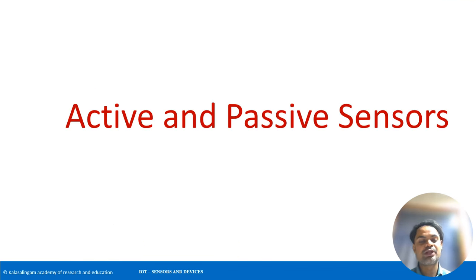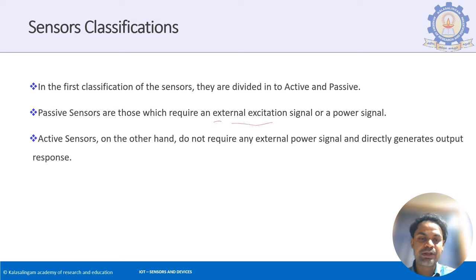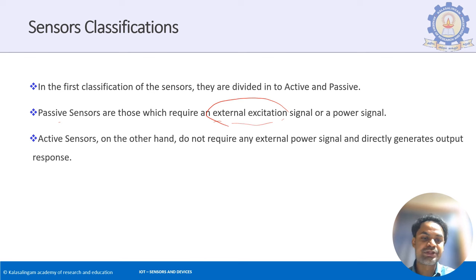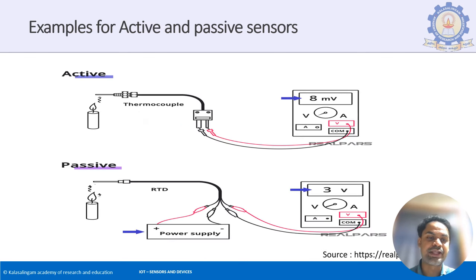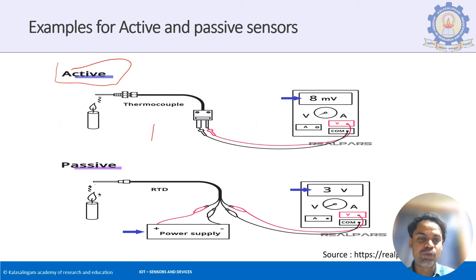Sensors can be classified as active and passive. Passive sensors require an external power supply. Active sensors do not require any external power supply. For example, a thermocouple — a temperature sensor — is an active type where no power supply is required; the voltage varies depending on the heat available.